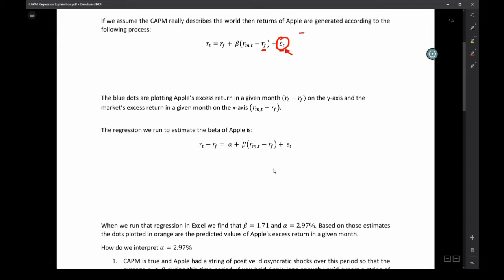One thing I do want to mention is when we are saying that this is how returns are generated, the return in time T is generated according to this formula, we're saying that CAPM is actually true. The only things that matter are the risk-free rate, the beta of that stock, which is our measure of systematic risk, what the market does, and then any idiosyncratic news. This is obviously a pretty darn strong assumption, but we're going to roll with it for a little bit.